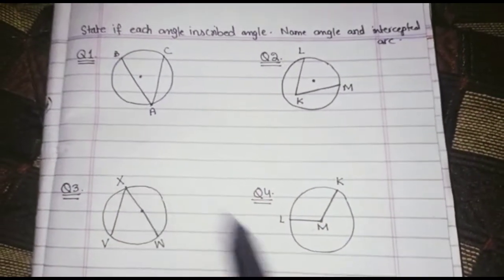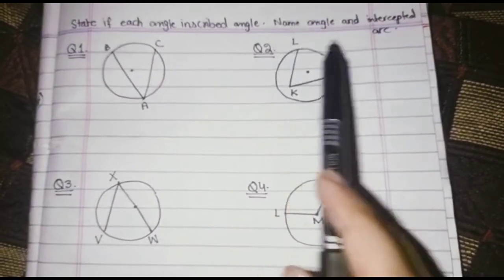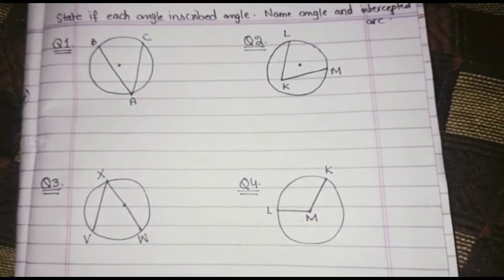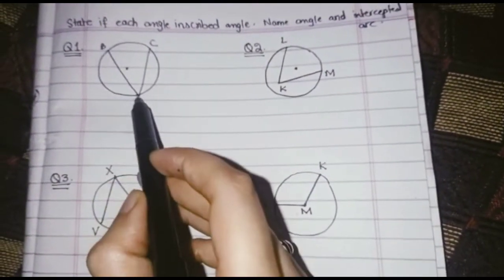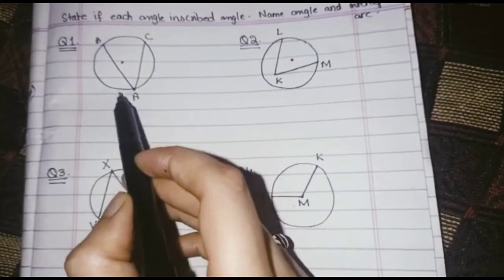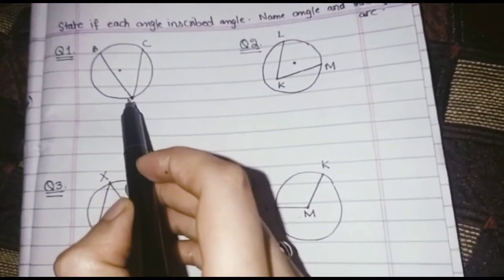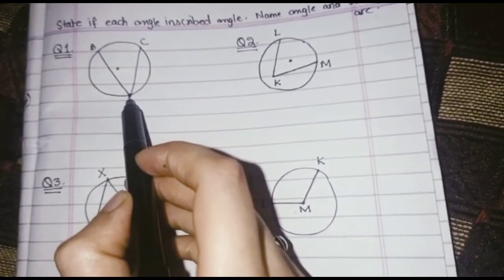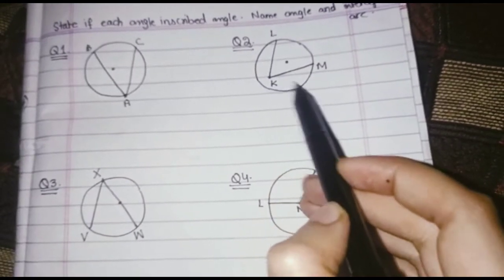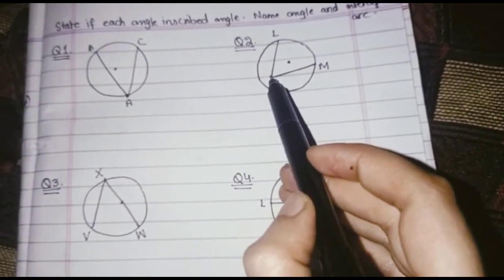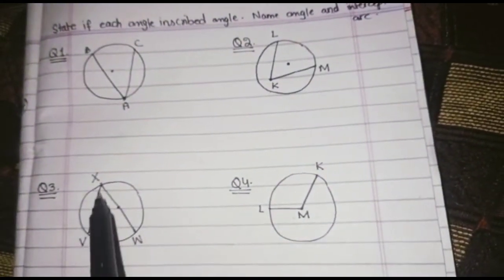We have a question from 1 to 4: stage each angle, name the inscribed angle, and identify the intercepted arc. Inscribed angles are those angles whose vertex is at the circle — the endpoints are on the circle and the vertex is on the circle. You can see here that its vertex is on the circle, but in this other case the vertex is not at any point of the circle — it is at the inner part of the circle, so it is not an inscribed angle.